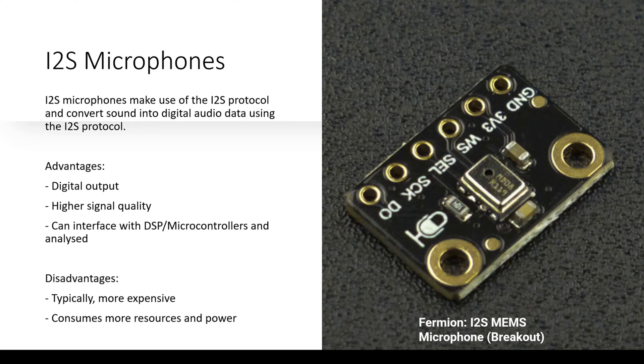Now keep in mind that we cannot just choose any microcontroller or DSP. This requires an I2S peripheral. So an ESP32 does have an I2S peripheral. Some versions of the STM32 may have an I2S peripheral on them. You need to be careful and look at what you're looking into. These are typically more expensive and they consume more resources and power.